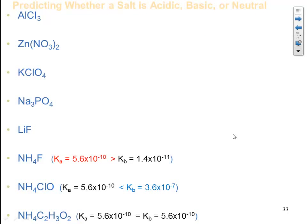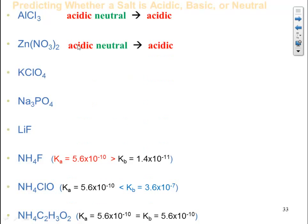Aluminum chloride: Is aluminum one of the cations we memorized as neutral? No — so it adds acidity. Is chloride one of the anions we memorized as neutral? Yes — so it contributes neutral. With an acidic cation and a neutral anion, the overall salt is acidic. For zinc nitrate: Is zinc one of the neutral cations? No — it adds acidity. Is nitrate one of the neutral anions? Yes. So again, acidic cation and neutral anion — the overall salt is acidic.